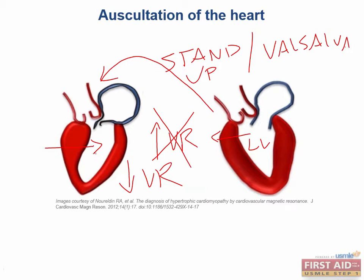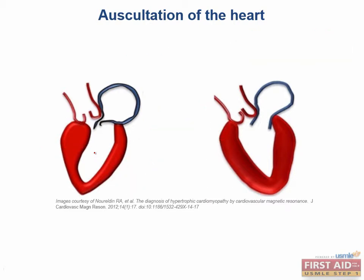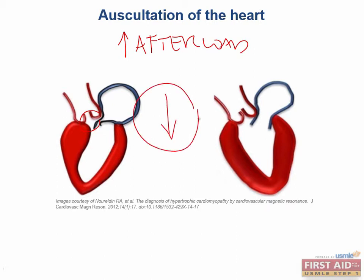Let's discuss hand grip. When you make a fist and squeeze, you compress the arteries and arterioles in your hand, essentially increasing afterload. This makes it harder for the left ventricle to pump blood over the obstructed outflow tract. There's going to be less blood pumped over the obstruction because there's less of a pressure gradient. So the intensity of the murmur in HCM is going to decrease with hand grip.